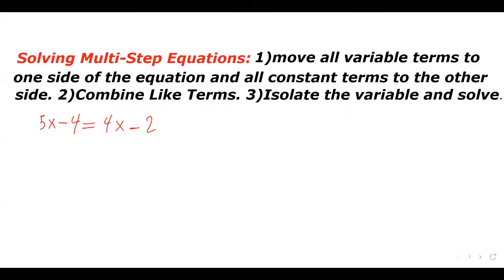Hi everyone. In this video, you will learn how to solve multi-step equations — equations which have variables on both sides. There are three simple steps to solve these types of equations. First, move all variable terms to one side and all constant terms to the other side. Then combine like terms. And the last step is to isolate the variable and solve it. Let's do some examples.